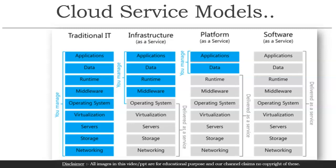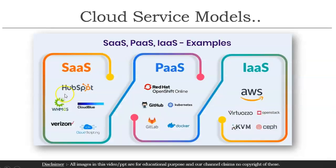CCSP asks a few questions on this. They frame a scenario and ask which service model you should select based on your capabilities and responsibilities. In SaaS you are responsible only for your data. In PaaS you are responsible for your application and data. In IaaS you are responsible from operating systems up to the application. Examples of PaaS include GitHub, GitLab, and Docker. SaaS examples include Outlook, HubSpot, and Fusion.